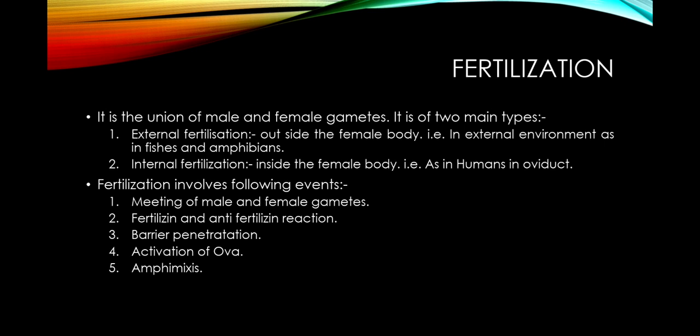Fertilization involves five main steps: one is the meeting of male and female gametes; two is the fertilizing and anti-fertilizing reaction — very important. For example, the female produces one egg per menstrual cycle while the male produces millions of sperm, yet only one sperm fertilizes the egg and the rest die. This is because of the fertilizing and anti-fertilizing reaction, which we will discuss in detail in forthcoming chapters. The next steps are barrier penetration, activation of ovum, and amphimixis — which is the union of male and female pronuclei within the egg.